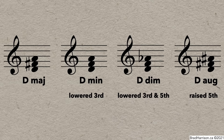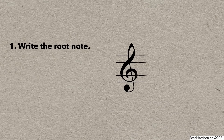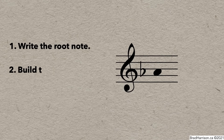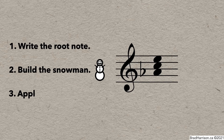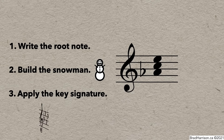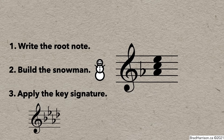Let's try another example in A flat. Write the root, A flat, and then build the snowman. Then apply the key signature. A flat has four flats: B, E, A, and D. We've already got A flat, and there's no B or D in this chord, but there is an E, so we'll make that flat. And there's the A flat major triad.